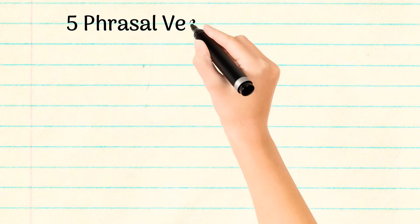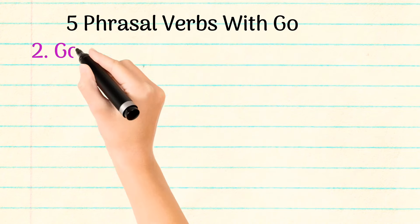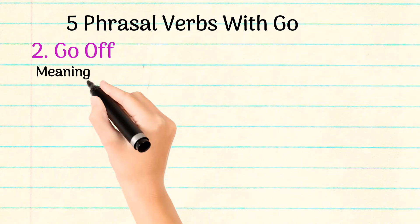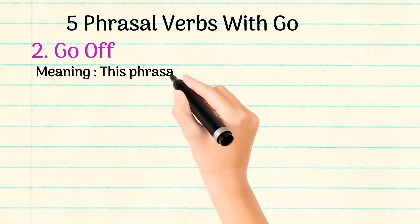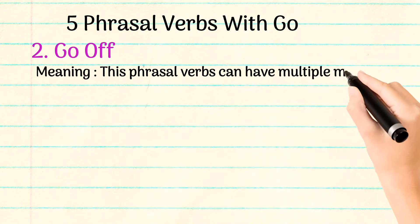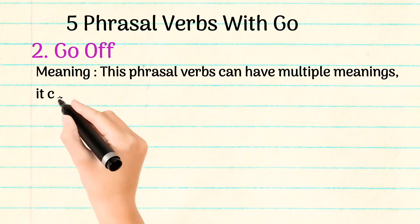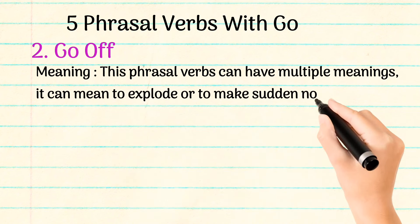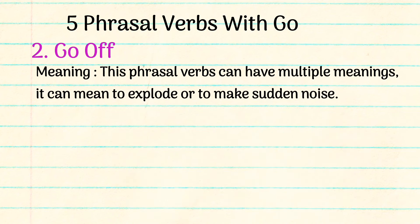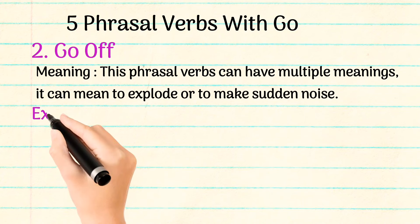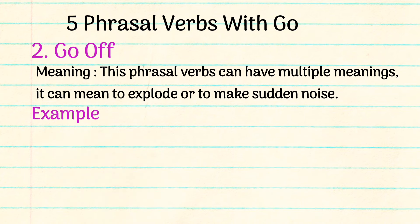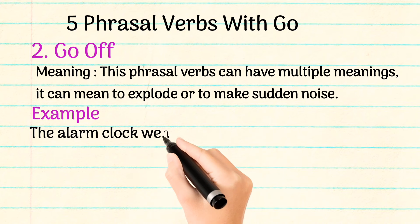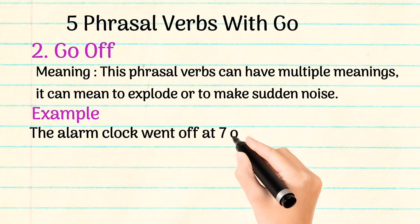The second phrasal verb is go off. This phrasal verb can have multiple meanings. It can mean to explode or to make a sudden noise. For example: The alarm clock went off at 7 o'clock.